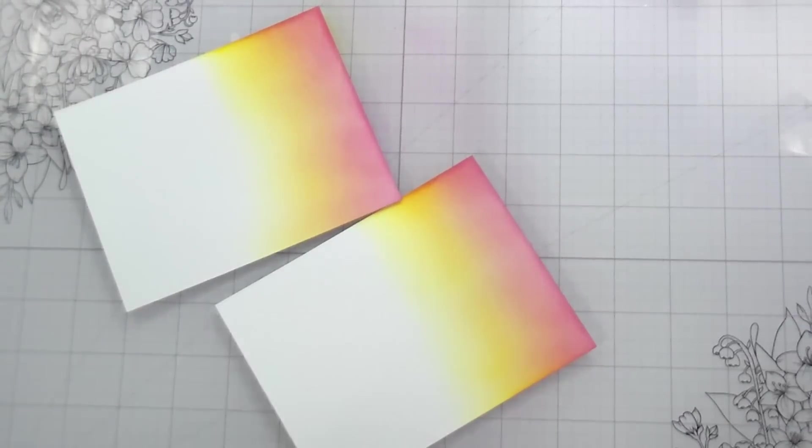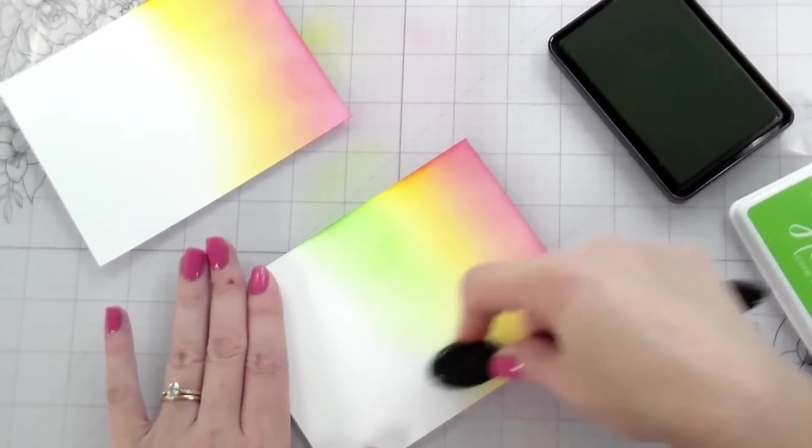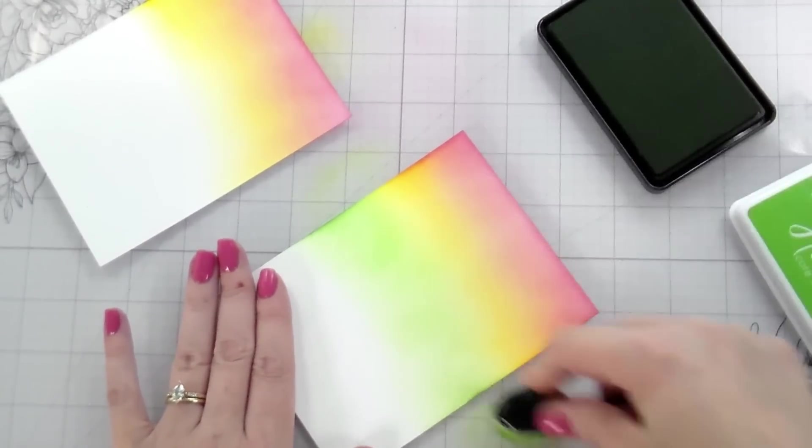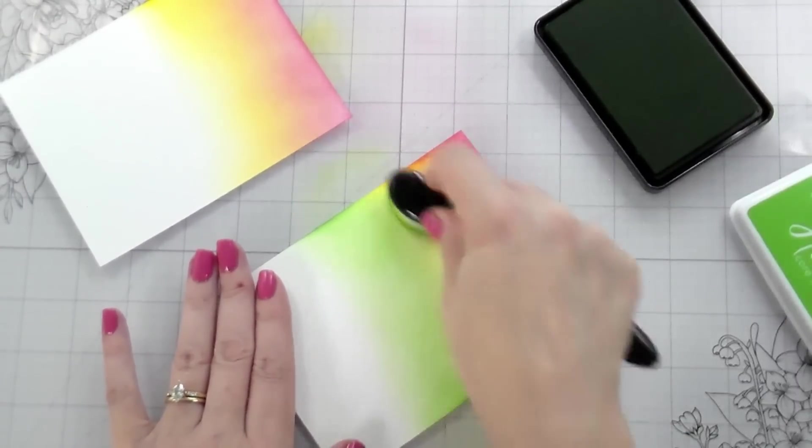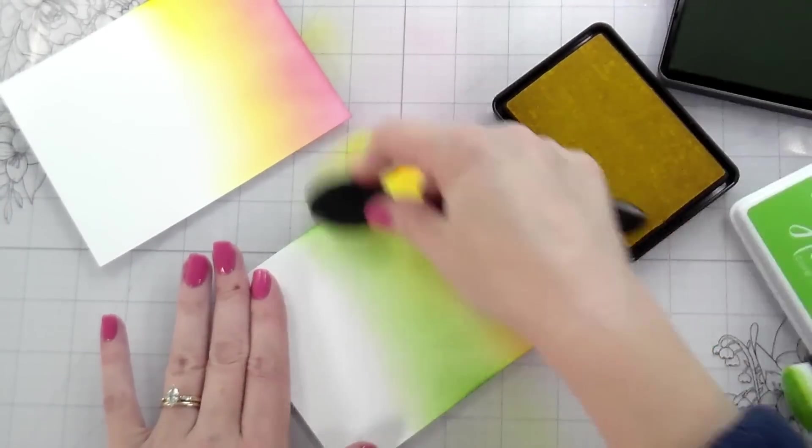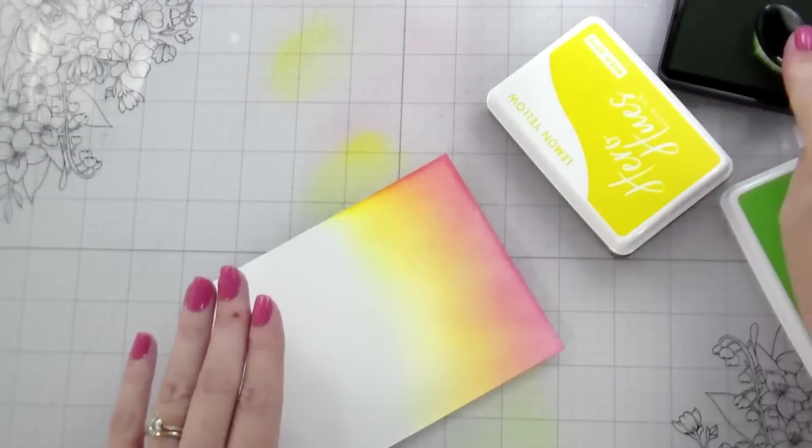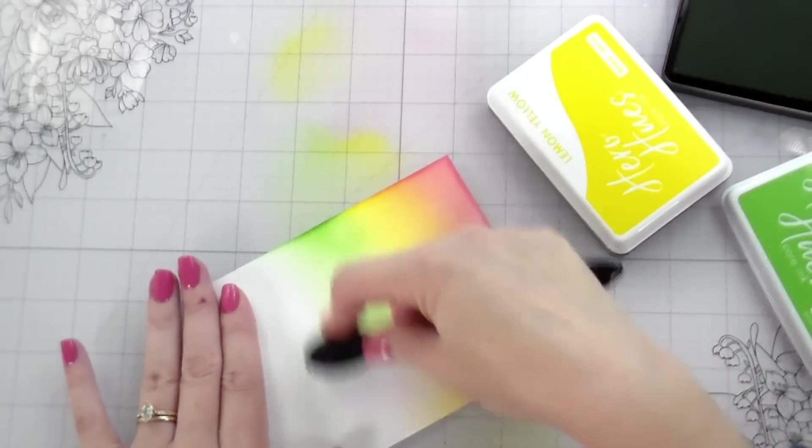So I just created a ink blended background. That's a rainbow. These are exactly the same. I'm creating two panels that are exactly the same. And then I'm going to die cut out of one of them. And one of them is going to be my card front. You don't have to do anything nearly this involved. You could use colored cardstock. That's what we're going to do for card number two.